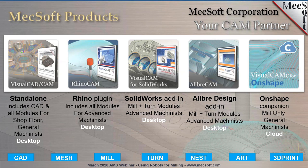We have also introduced mill-turn in these products. Last year, we released a pure cloud-based product called Visual CAM for OnShape — a companion product for the OnShape platform. Right now it only has milling, but we feel this is the future and will continue to invest in this technology. The blue boxes at the bottom of the slide show our different modules: CAD, Mesh, Mill, Turn, Nest, Art, and 3D Print.